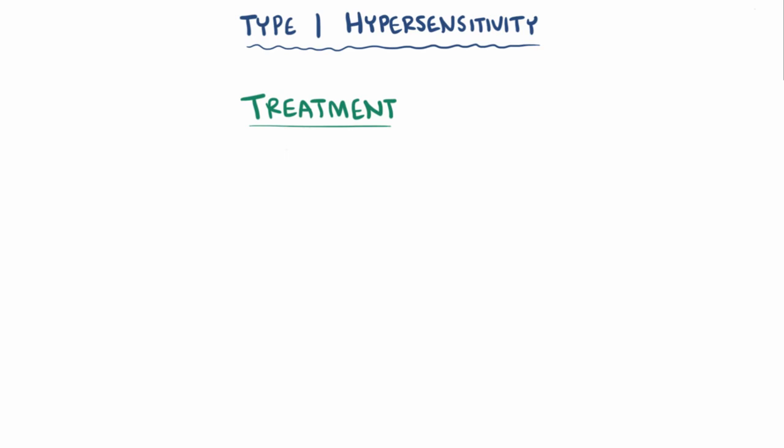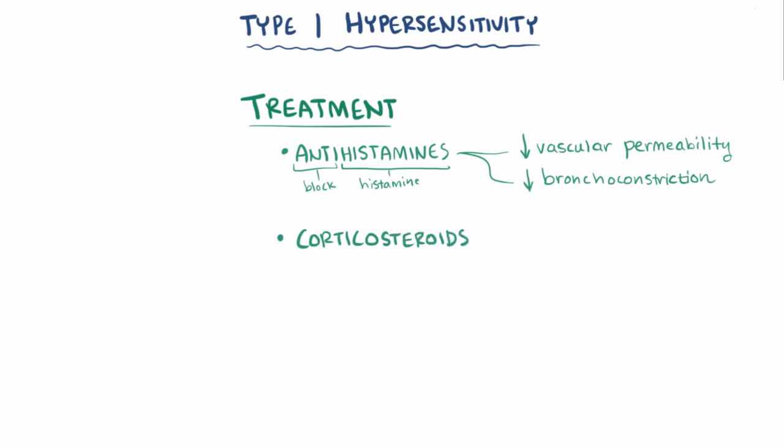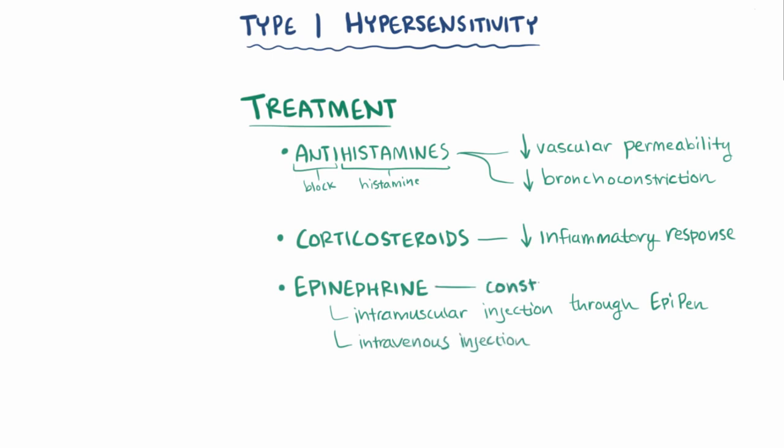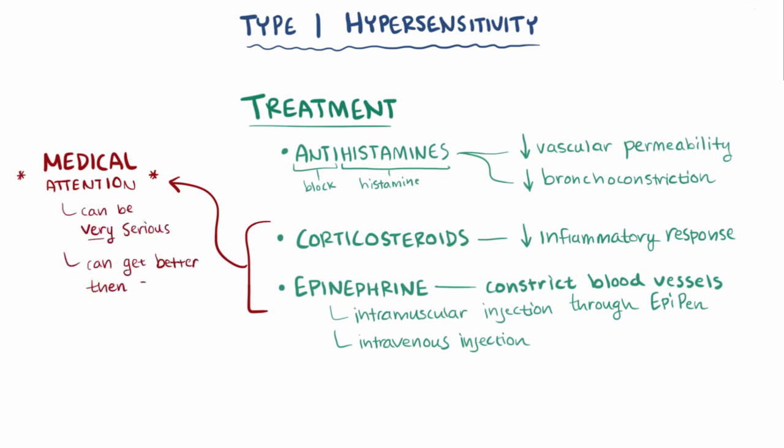Treatment for type 1 hypersensitivity can involve a variety of medications. Antihistamines act to block the effects of histamine, which reduces vascular permeability and bronchoconstriction. Also there are corticosteroids, which can be used to reduce the inflammatory response, as well as epinephrine, which is sometimes given during severe reactions via intramuscular injections through an EpiPen or intravenous injection. Epinephrine can help constrict blood vessels and prevent anaphylactic shock. If there's ever a serious type 1 hypersensitivity reaction that requires something like steroids or epinephrine, it's super important to get medical attention, because type 1 hypersensitivity reactions can be really serious and can sometimes get slightly better before getting worse again.